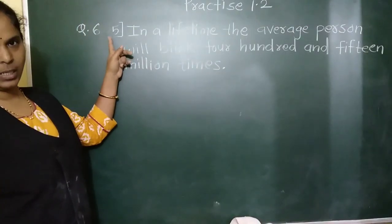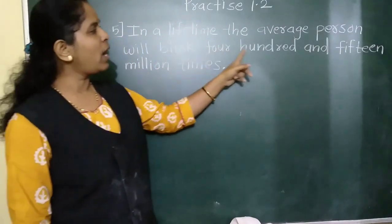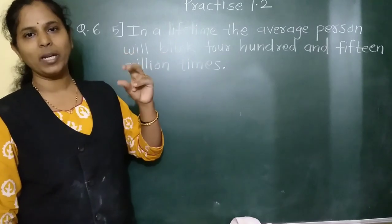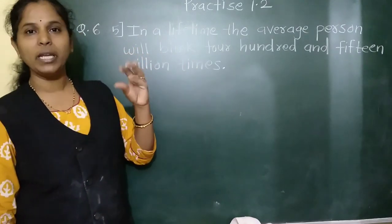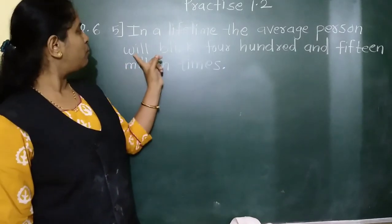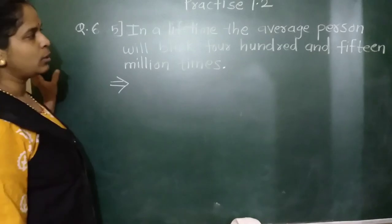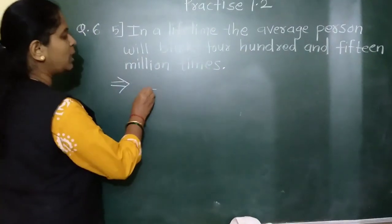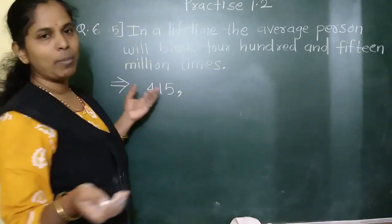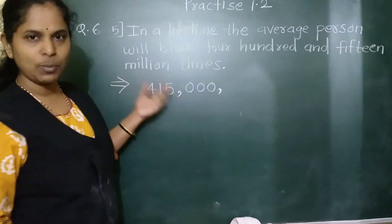Question number 6, fifth: in a lifetime, the average person will blink four hundred and fifteen million times. Blink means to open and close the eyes. So in a lifetime, a person blinks 415 million times. In the millions period, three digits: 415. In the thousands period, no number, so three zeros. In the ones period also, no number, so three zeros.